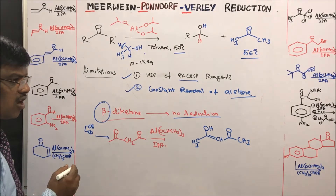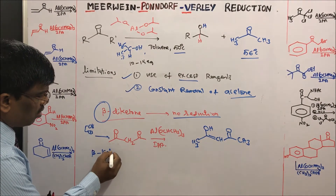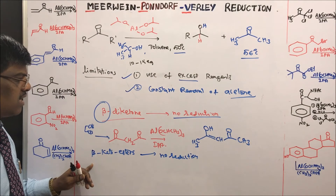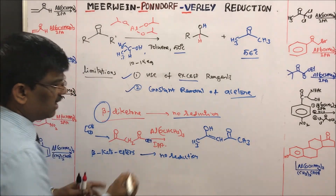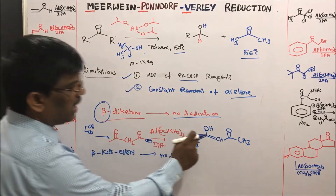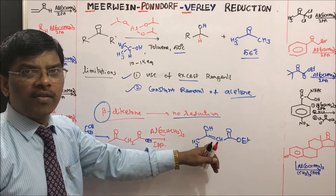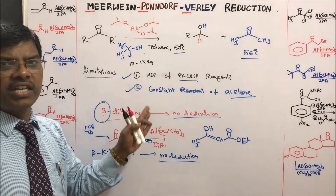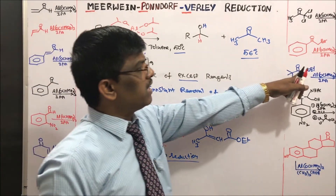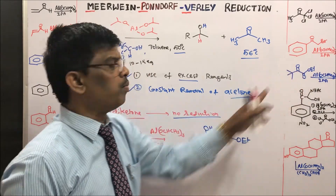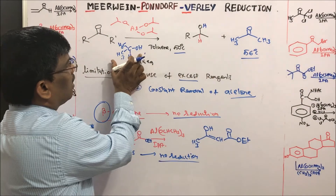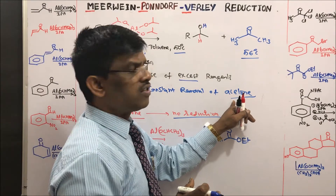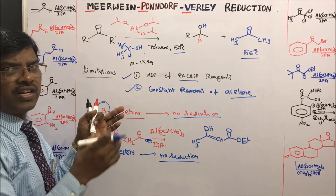Similarly, beta-keto esters are also not reduced under MPV conditions because they also exist in the enol form — for example, ethyl acetoacetate exists mainly as the enol tautomer. These are the main limitations. However, for other keto-ester substrates, MPV specifically reduces the keto group. The reagents are cheap and commercially available, and acetone removal is easily handled by continuous distillation.